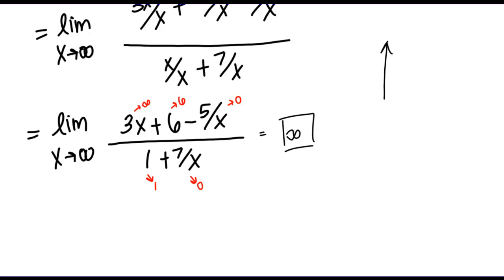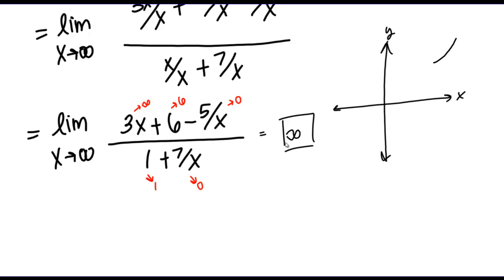So what does that tell me about my function? Looking at the limit as x goes to infinity tells us about the end behavior — that is, what's happening on the right end. The fact that this limit equals infinity tells me that I don't have any horizontal asymptotes. Rather, on the right end of the graph, my function is just going to be getting larger and larger without bound.